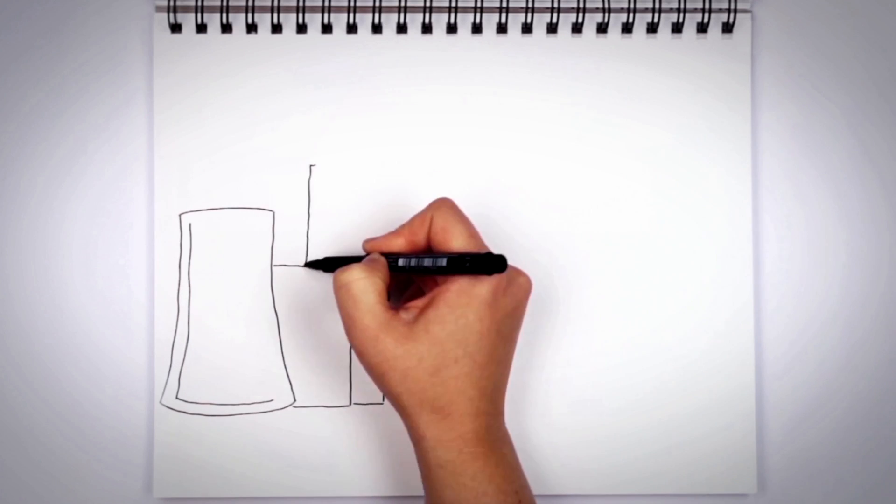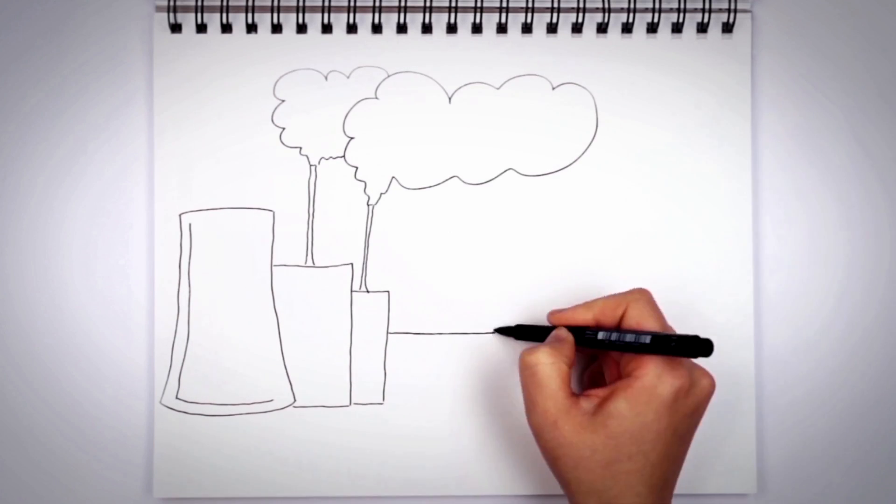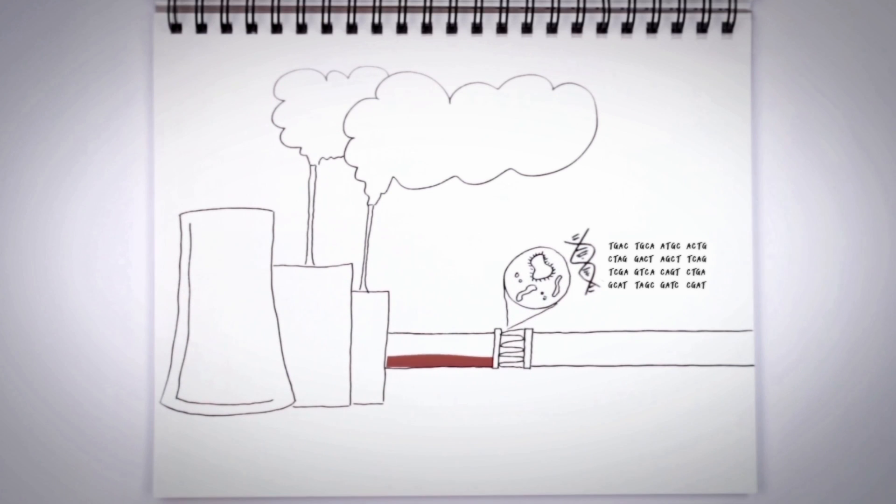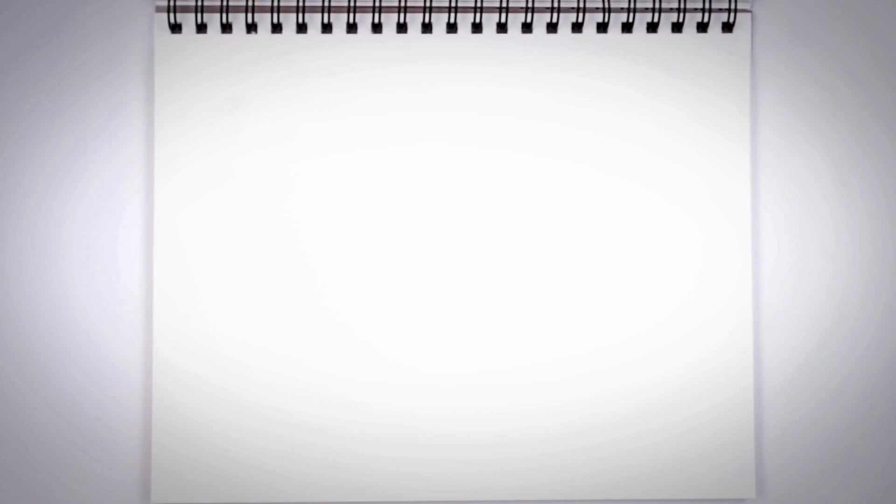Microbes also play a role in the mining sector, where water treatment is a huge challenge. Some microbes act like tiny water purifiers. Using genomics to study their DNA, we can find better ways to use microbes in water treatment systems. This has the potential to help companies save up to $100 million per facility.